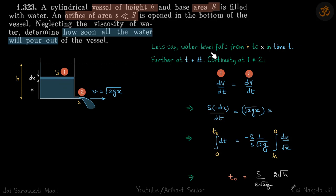Let's say water level falls from h to x in time t, and further at t plus dt, we will write continuity equations at 1 and 2. At 1, dV by dt, the volume flow rate, is equal to the volume flow rate at point 2. How much volume has changed at point 1? The water column has fallen by dx amount.